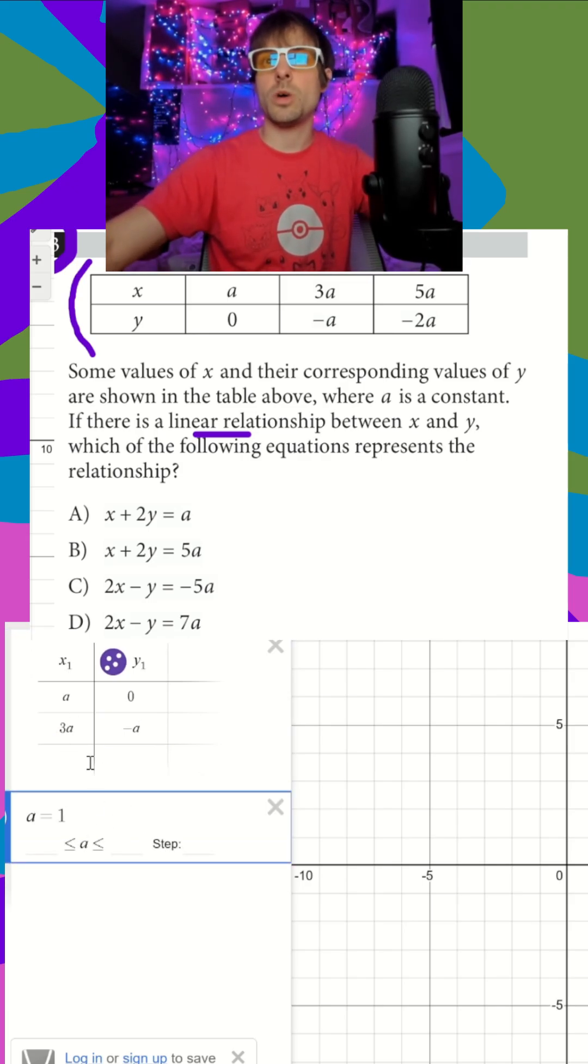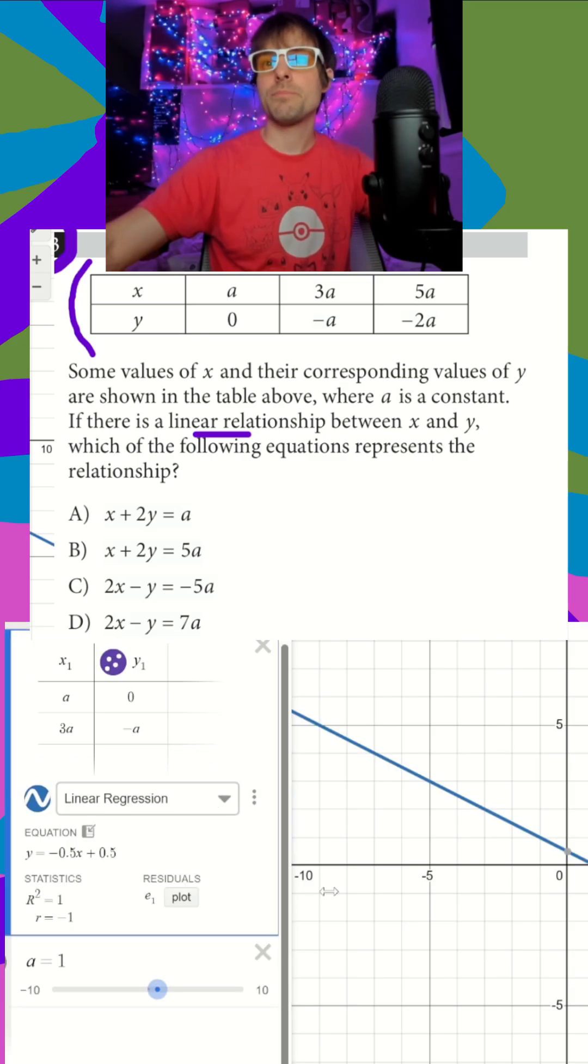So I just say a equals one. And then remember to graph our line, it's going to be this right here. So this is a representation of our data points as a graph if our a is equal to one.